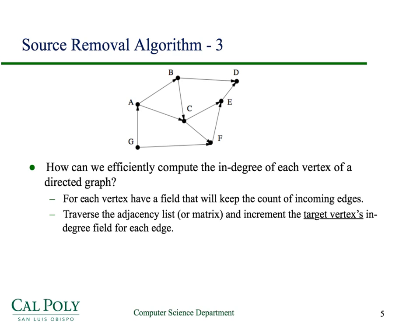To efficiently compute the in-degree for every vertex of a directed graph, we set up for each vertex a field that will keep count of the incoming edges — that is, the in-degree of that vertex. We initialize that to zero, then traverse the adjacency list or adjacency matrix, depending on how the graph is represented, and increment the target vertex's in-degree for each edge on the adjacency list.